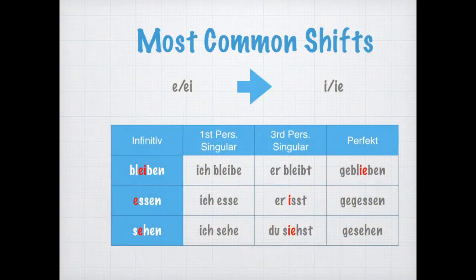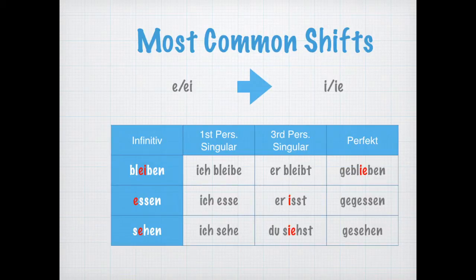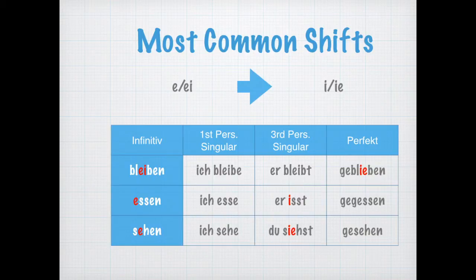Group number one is when an E or an I in the stem becomes an I or an IE. Three examples: on the left-hand side you will see the infinitive, then we've got the first person singular, third person singular, and the perfect — which is the first past tense you're going to learn. The verb bleiben is regular in the present tense and then pops in a little geblieben instead of gebleiben in the perfect. The verbs essen and sehen both include the vowel shift in the second and third person singular. Essen: ich esse, er isst. Sehen: ich sehe, du siehst.